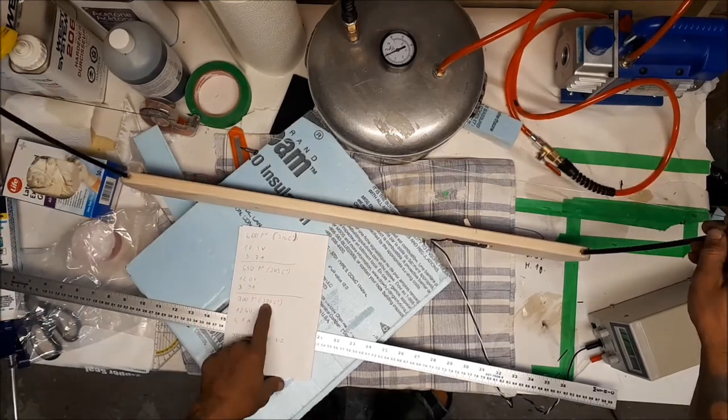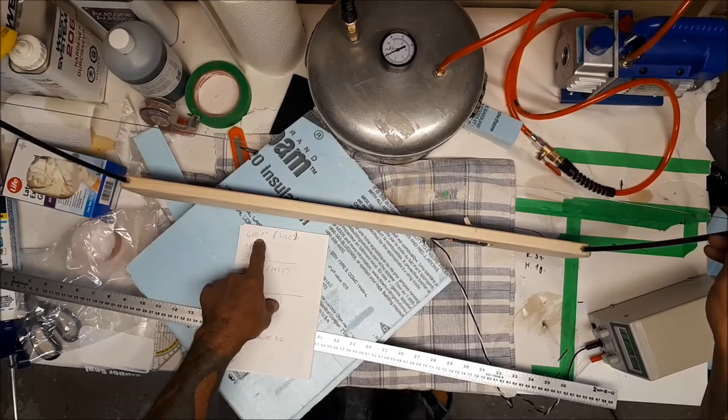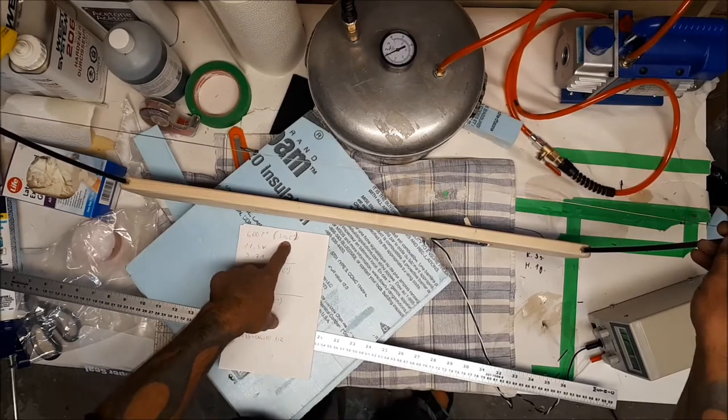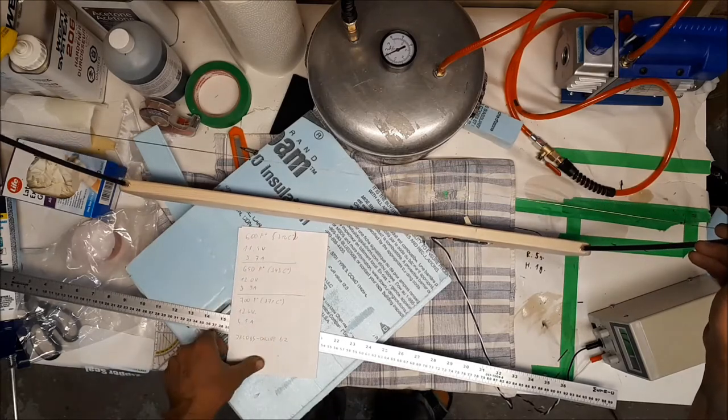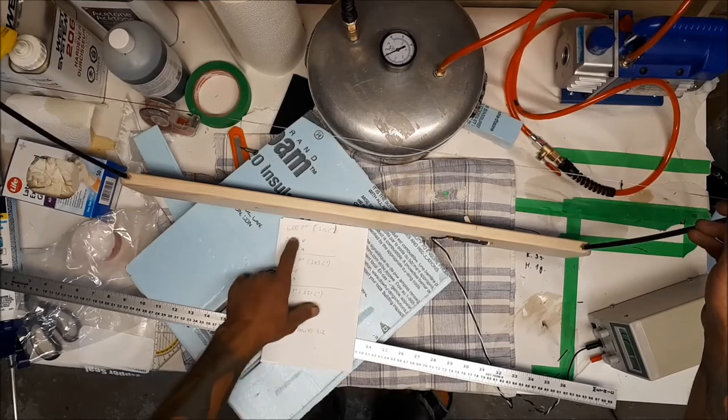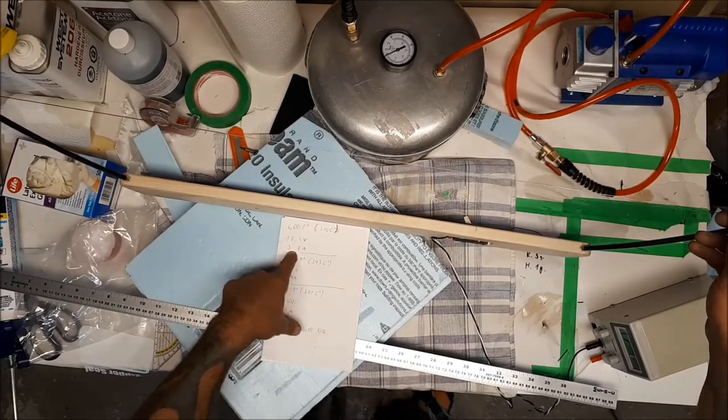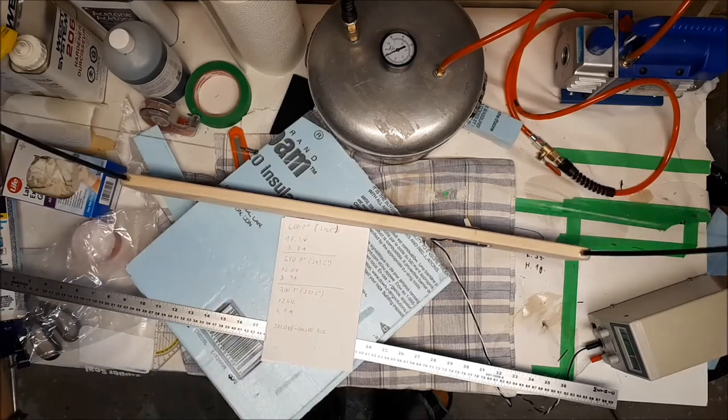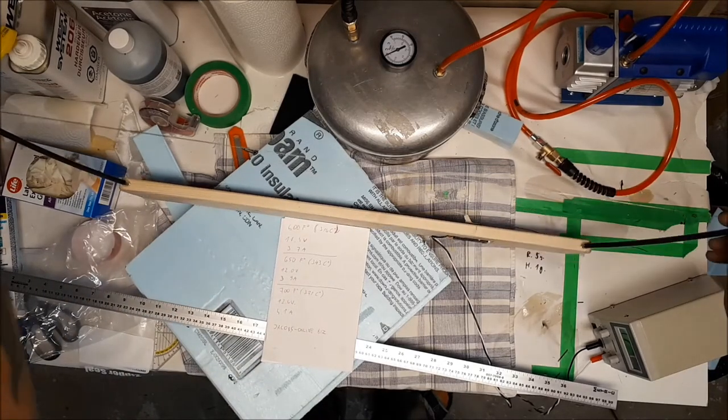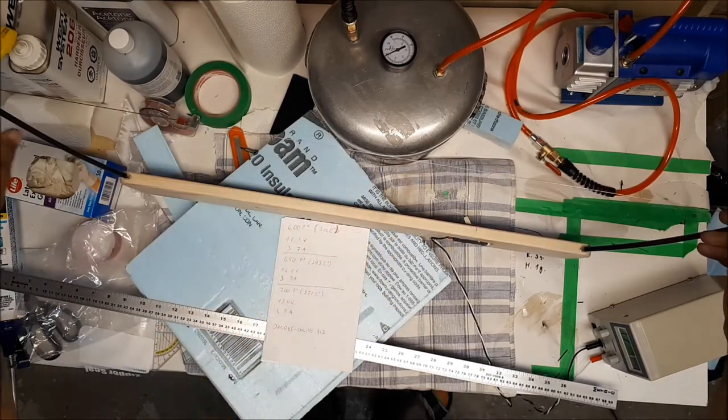What's cool about online is that they have a hot wire calculator. As they say, 600 Fahrenheit, that's 316 Celsius, it's enough for cutting foam. You put in your things and they tell you what voltage and what amperage you need. So for 600, I calculated by the length of 90 centimeters that I need 11.4 volts and 3.7 amps.